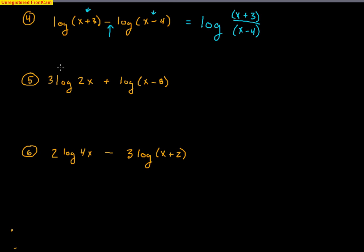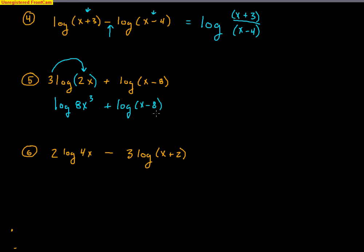Here's another tricky one. First, that 3 out in front goes up as an exponent — but be very careful, it doesn't just go to the x or the 2; it goes to the entire value 2x. So that becomes (2x) cubed, which equals 8x cubed. Plus log of (x minus 8) — subtraction inside a log is a dead end. The only thing left is to combine with multiplication: log of 8x cubed times (x minus 8). I use brackets to solidify that the log covers the entire value.